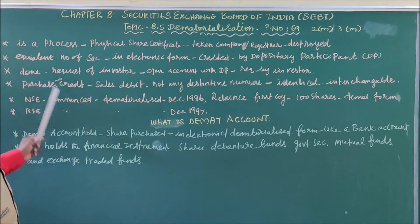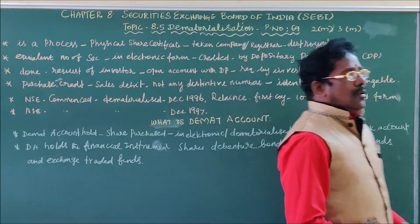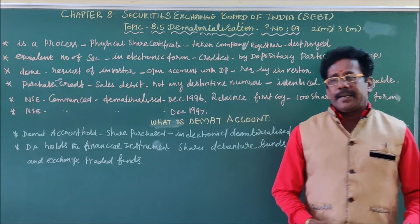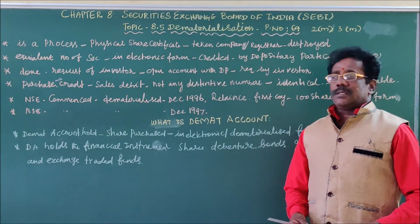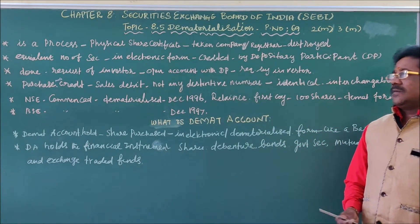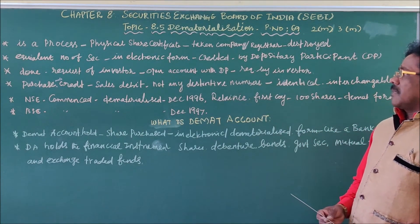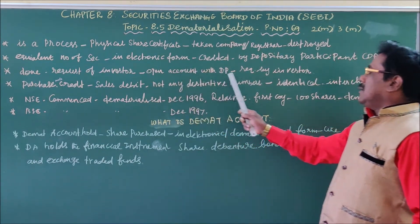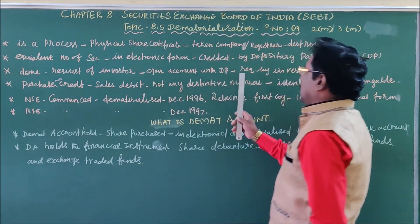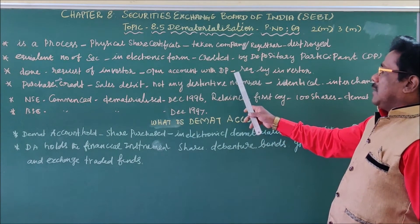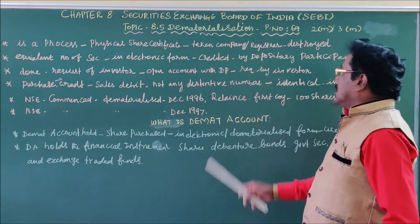Dematerialization is done only at the request of the investors. For this, the investor has to open a separate demat account with the depository participant. After opening such an account, the investor has to give a requisition to the depository participant along with the certificates.